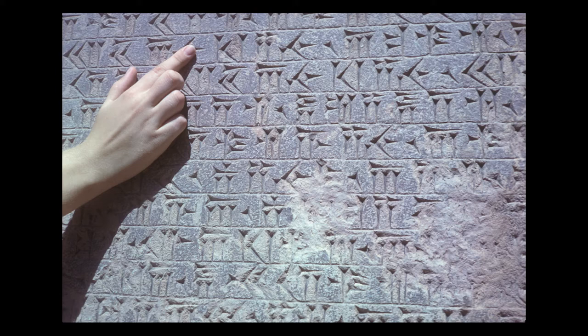Section 14: "King Darius says: The kingdom that had been wrested from our line I brought back and I re-established it on its foundation. The temples which Gaumata the Magian had destroyed, I restored to the people, and the pasture lands, and the herds and the dwelling places, and the houses which Gaumata the Magian had taken away. I settled the people in their place — the people of Persia and Media and the other provinces. I restored that which had been taken away, as it was in the days of old. This did I by the grace of Ahura Mazda. I labored until I had established our dynasty in its place, as in the days of old, so that Gaumata the Magian did not dispossess our house."